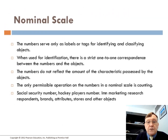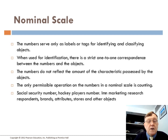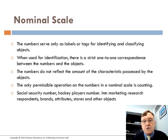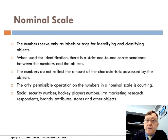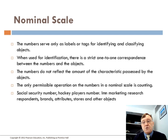So the nominal scale: numbers serve only as labels or tags for identifying and classifying objects. When used for identification, there is a strict one-to-one correspondence between the numbers and the objects — a particular group is one, another group is two. The numbers do not reflect the amount of a characteristic possessed by the object. The only permissible operation on numbers in a nominal scale is counting. Examples include social security numbers, hockey player numbers, and in market research: brands, attributes, and stores.